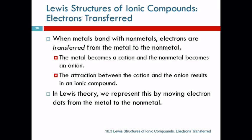So in Lewis theory we represent this by moving electrons from the metal to the non-metal. This is a good illustration because these atoms can't just go to an electron bank and take out electrons when they want extras. They can't donate unwanted electrons to the pound or leave them by the side of the road. They have to be given to another atom.